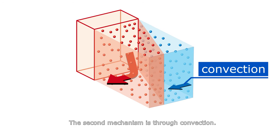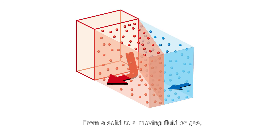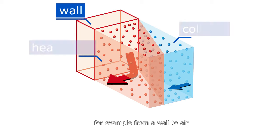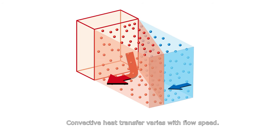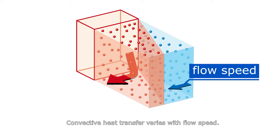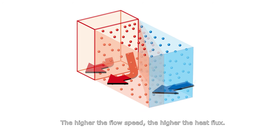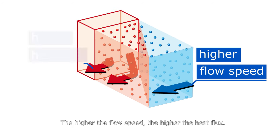The second mechanism is through convection, from a solid to a moving fluid or gas. For example, from a wall to air. Convective heat transfer varies with flow speed. The higher the flow speed, the higher the heat flux.